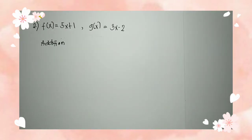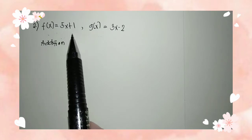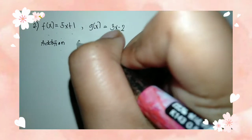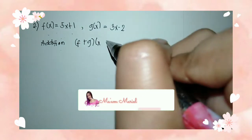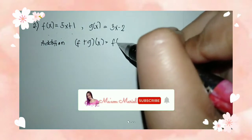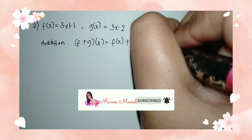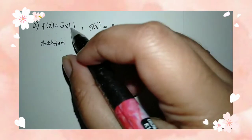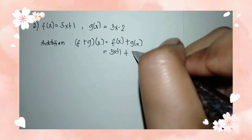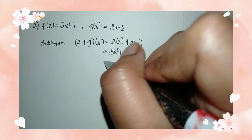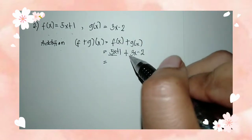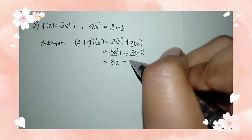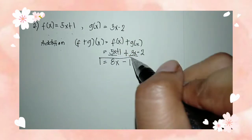For example number 2, we have f of x is equal to 5x plus 1 and g of x is equal to 3x minus 2. Moving on to addition, we have f plus g of x is equal to f of x plus g of x. So we have 5x plus 1 as f of x, plus g of x which is 3x minus 2. Combine the like terms: 5x plus 3x equals 8x. Then positive 1 minus 2 is equal to negative 1. So 8x minus 1 is the answer.